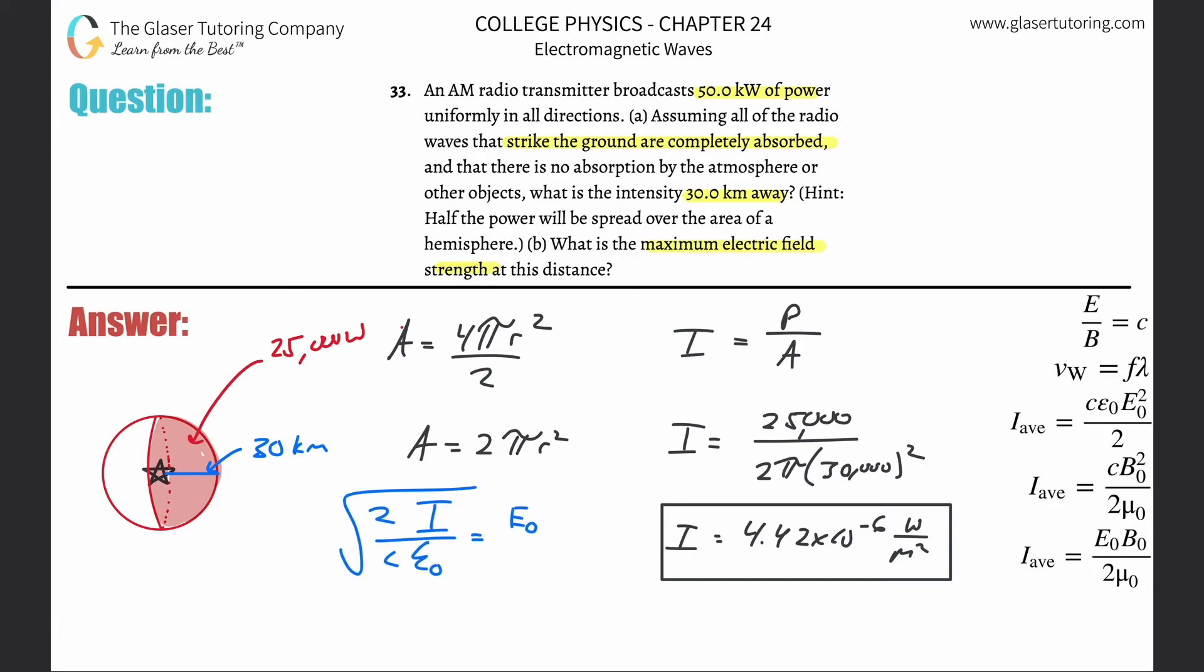Now all we have to do is basically just plug this in. There's going to be the square root of 2 times that intensity we just found, 4.42 times 10 to the minus 6, all divided by the speed of light 3 times 10 to the 8, multiplied by the permittivity of free space, which is about 8.85 times 10 to the minus 12.